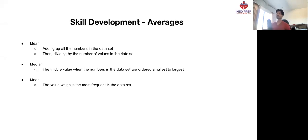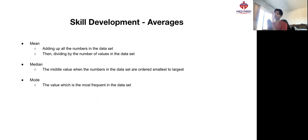There are two other types of averages. The first of them is median — the middle value when the numbers in the data set are ordered smallest to largest. And then the other one is mode, which is simply the most frequent value in the data set.